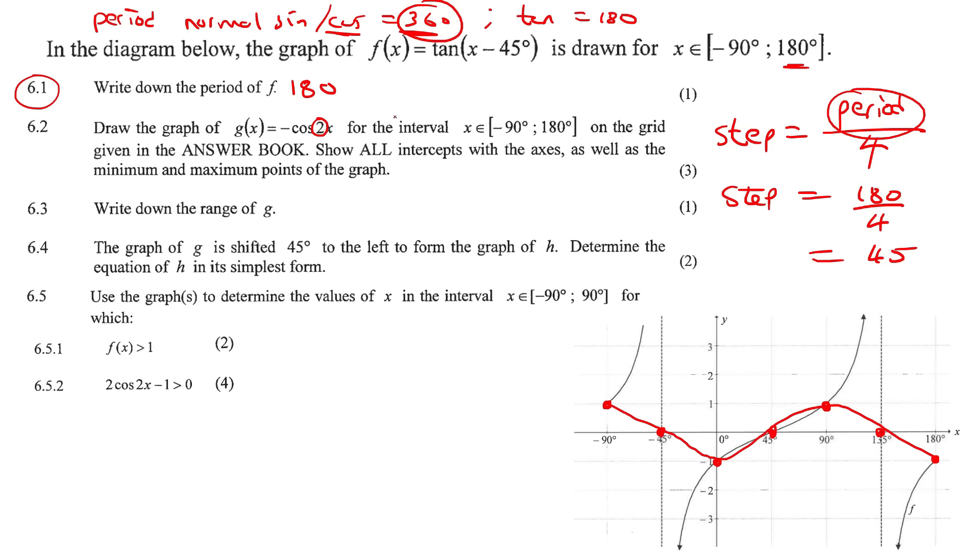Now they said, please show all the intercepts. So I guess we could just go fill that in. 45 and 0. 135 and 0. And then minus 45 and 0. As well as the minimum and maximum points. So this we could put as minus 90 and 1. Here we could say 90 and 1. And then here we could say 0 and negative 1. And then at the end here, 180. Now we've drawn all the graphs.